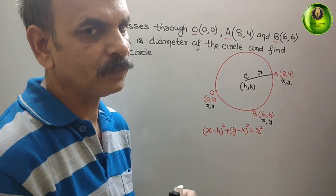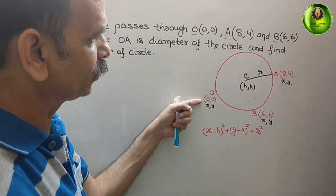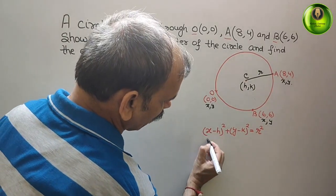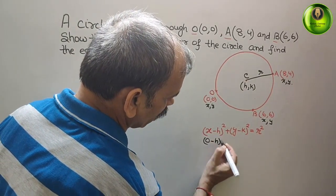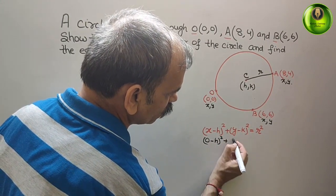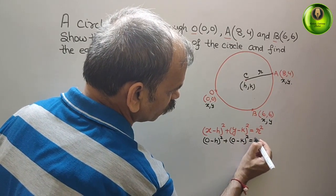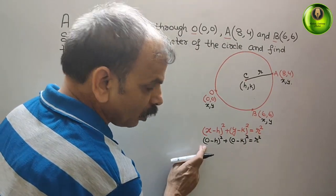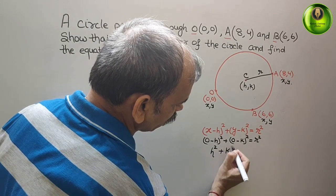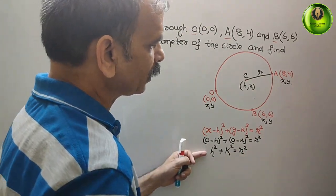Now, one by one, we will substitute the values. Taking X as 0 and Y as 0, we get: (0 - H)² + (0 - K)² = R². Solving this gives H² + K² = R². From point O, we got this.